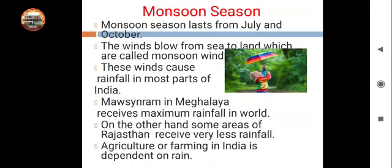Our monsoon season is very important for us. Why? Because India is an agricultural land — the majority of people do farming and are very dependent on rainfall for their agriculture. That is why monsoon is very important. In the rainy season, we use raincoats and umbrellas, and different food items like tea and pakodas are eaten a lot during this time.